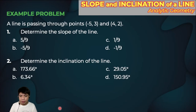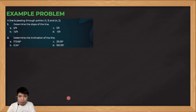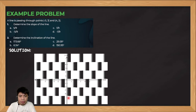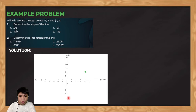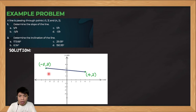Let us now solve this problem. A line is passing through points negative 5, 3 and 4, 2. Determine the slope of the line and determine the inclination of the line. It would be helpful to plot first these points and the line. Point 4, 2 is located at quadrant 1 because both abscissa and ordinate are positive. Point negative 5, 3 is located at quadrant 2 because the abscissa is negative and the ordinate is positive. Connecting these two points gives us the line.